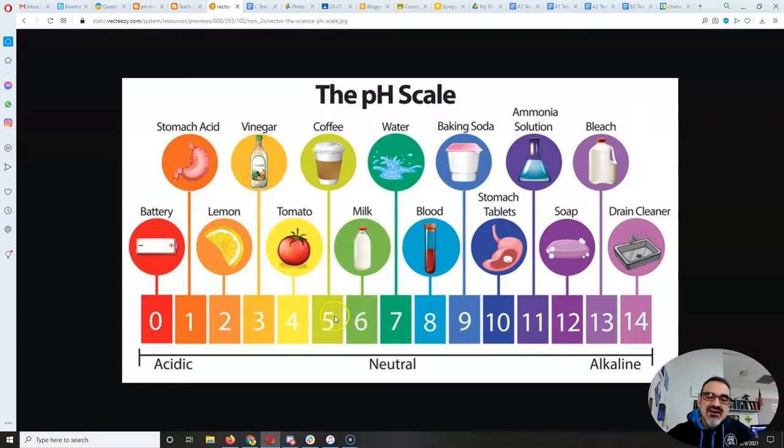And each one, like coffee and tomatoes, since tomatoes are 4 and coffee is 5, tomatoes are 10 times more acidic than coffee. So it goes by 10, right? So vinegar, which is 3, is 10 times 10, and vinegar is 100 times more acidic than coffee. Whoa. But look, 10 times 10 times 10 for lemon, that's 1,000 times more acidic than coffee. And it works the other way, too. So baking soda is 10 times more basic than blood, and stomach tablets are 100 times more basic, and ammonia is 1,000 times.